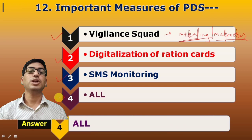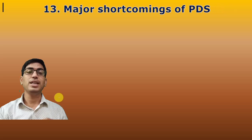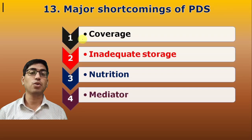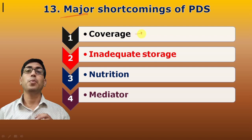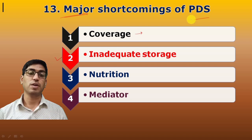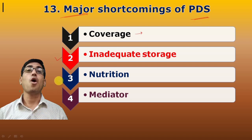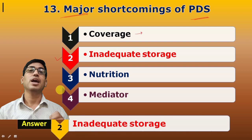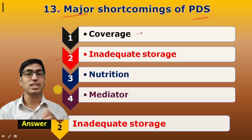Thirteenth question: Major shortcomings of PDS. The answer includes inadequate coverage — not reaching all parts — and inadequate storage facility. These are the major shortcomings, as the system could not provide all different types of coverage adequately.